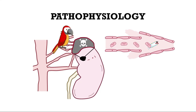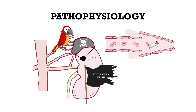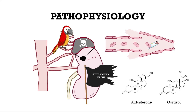In this case, Waterhouse-Friedrichsen syndrome can lead to a so-called Addisonian crisis. Both adrenal glands stop producing hormones — especially aldosterone and cortisol — which is, when left untreated, fatal.